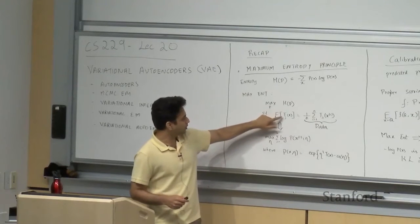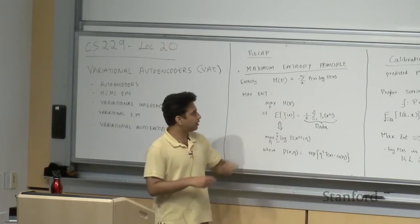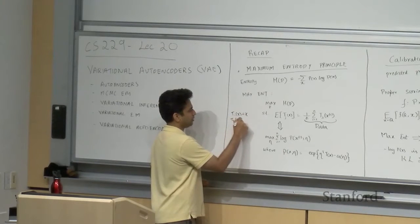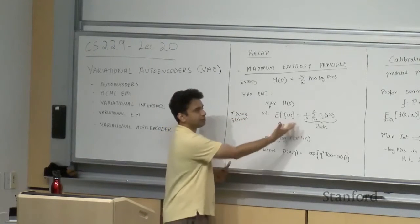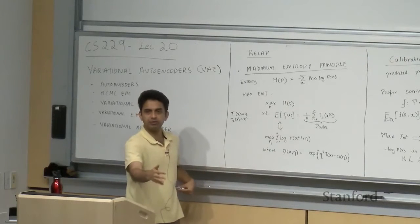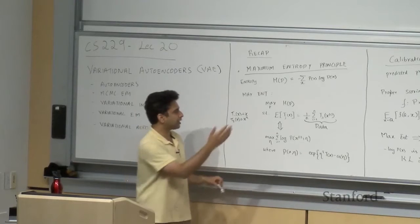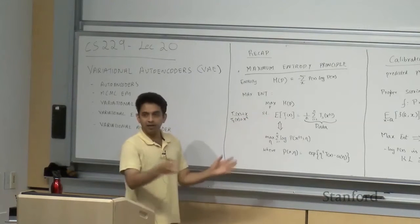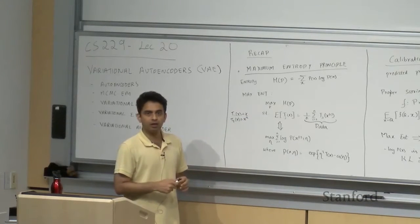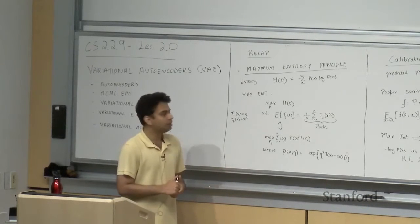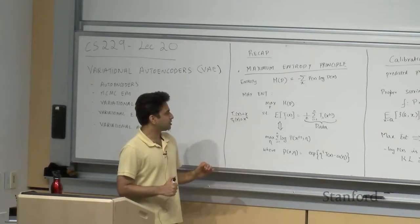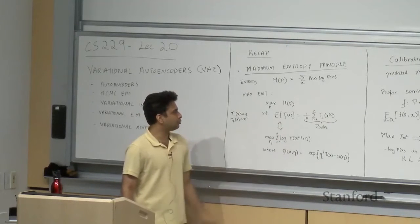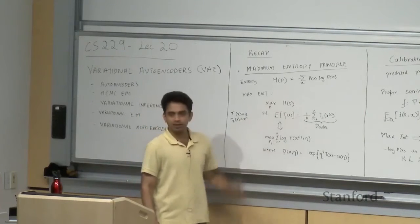For example, if t1(x) = x and t2(x) = x², then the constraints express that the first moment of the distribution should equal the first moment of the data, and the second moment of the distribution should equal the second moment of the data. Subject to these constraints, we generally have an infinite number of probability distributions. The maximum entropy principle says that among all candidate distributions satisfying these moment constraints, we should choose the one that maximizes entropy.